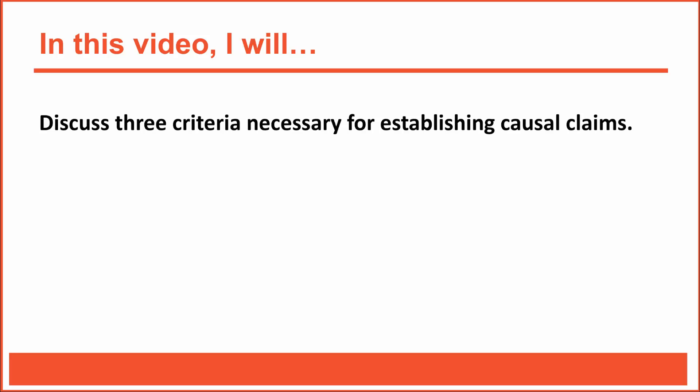In the last video, we discussed how to evaluate association claims. Association claims typically emerge from correlational research studies, where researchers measure two or more variables and test to see if those variables are associated or correlated. The words association and correlation are different, but for research purposes, they mean the same thing. If there is an association between two variables, then there is a correlation between those variables, meaning the two variables co-vary.